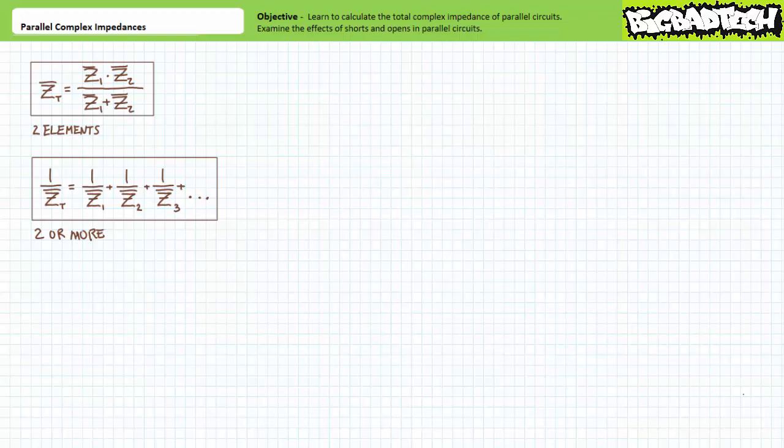The more involved method to solve for the total impedance of two or more parallel elements necessitates a user add the inverses of those elements comprising the relationship and then take the inverse of this sum. One over ZT equals one over Z1 plus one over Z2 plus one over Z3 and so on. Importantly, you must realize that this method solves for one over ZT, not the total impedance ZT. One must take the inverse of one over ZT to obtain the final total impedance ZT.